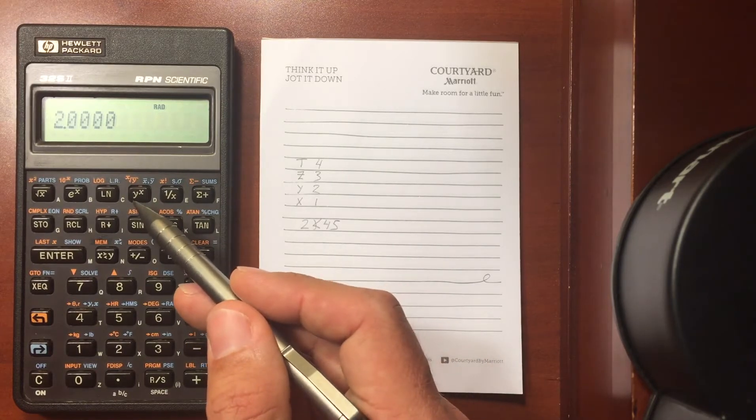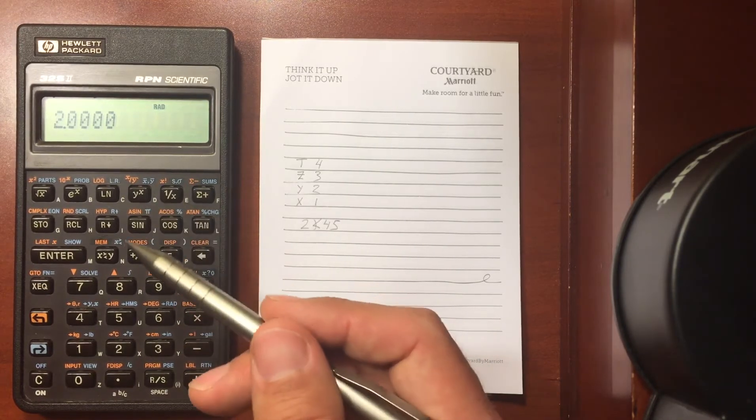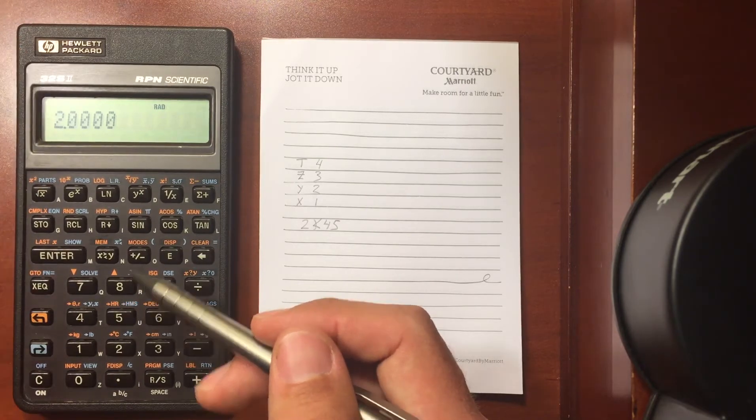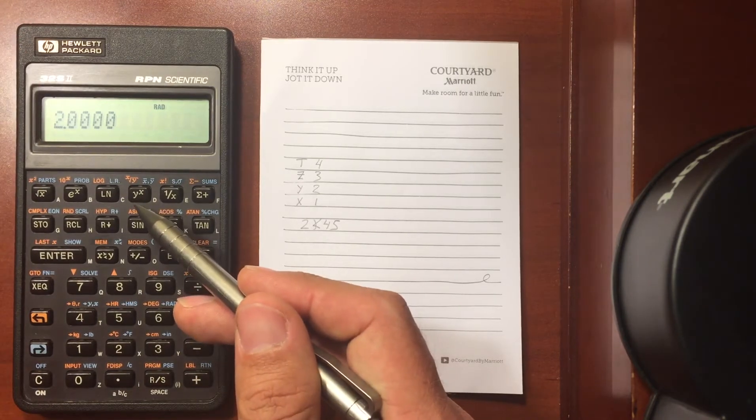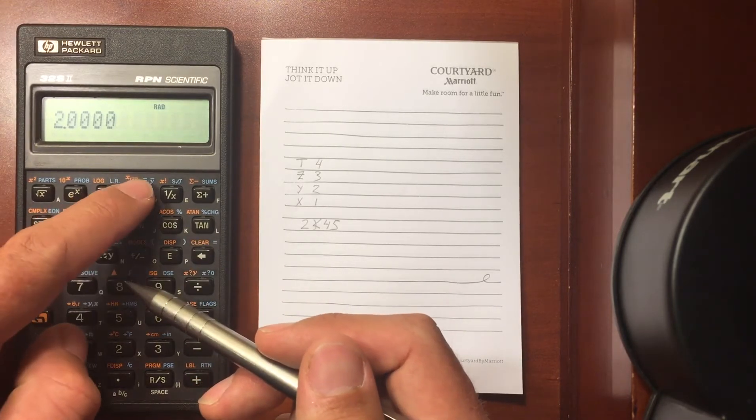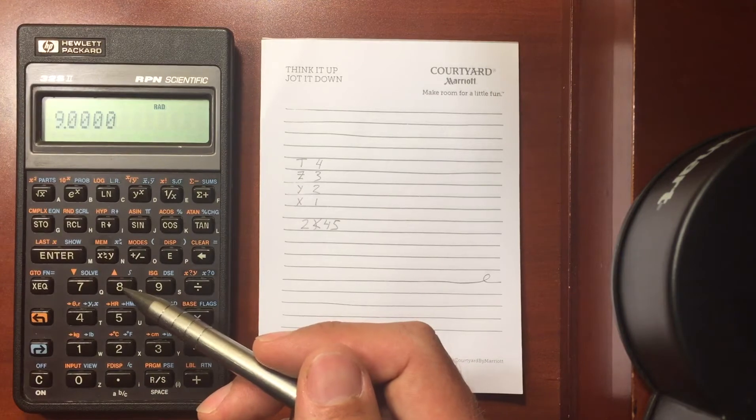If I do Y to the X, remember I've got in my Y register, I've got a 3, it's above this 2, so that'll be 3 to what's in the X register, so 3 squared. So hit that button, and I get 3 squared, which is 9.